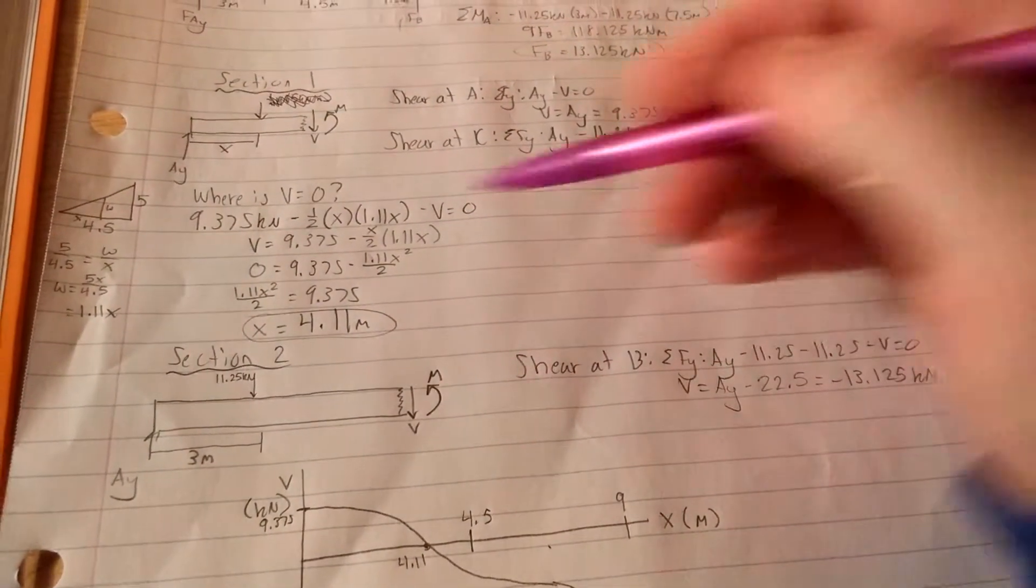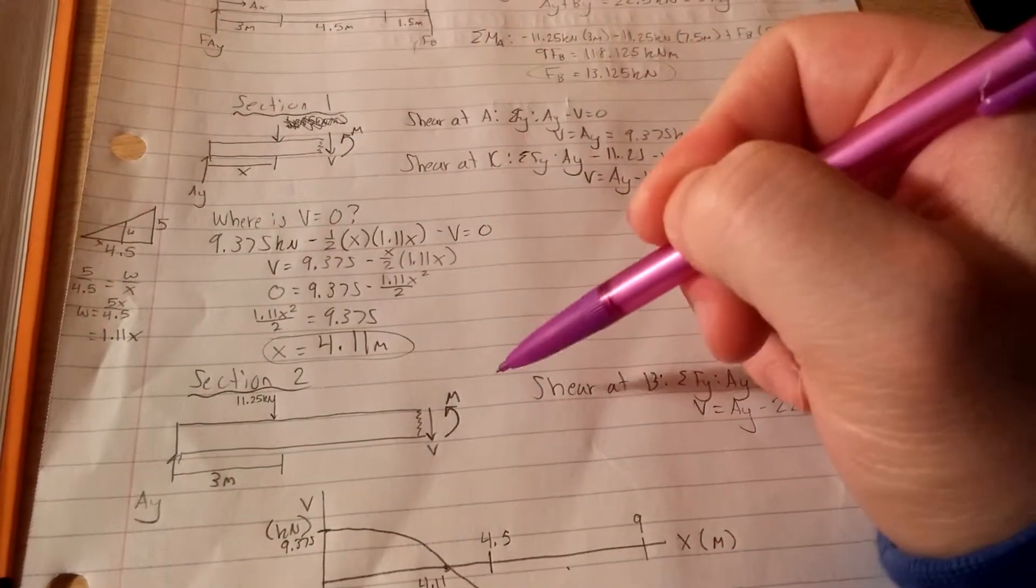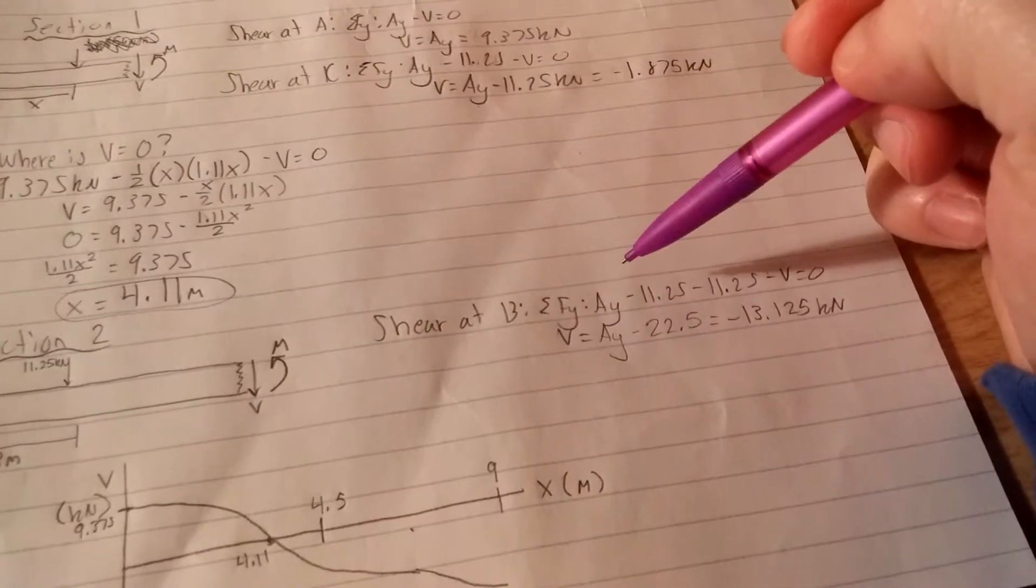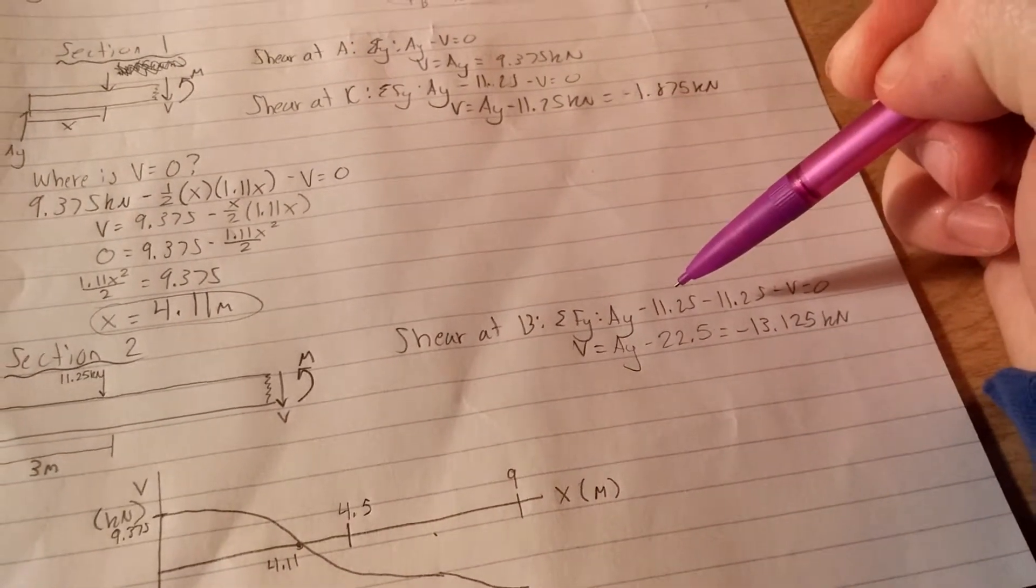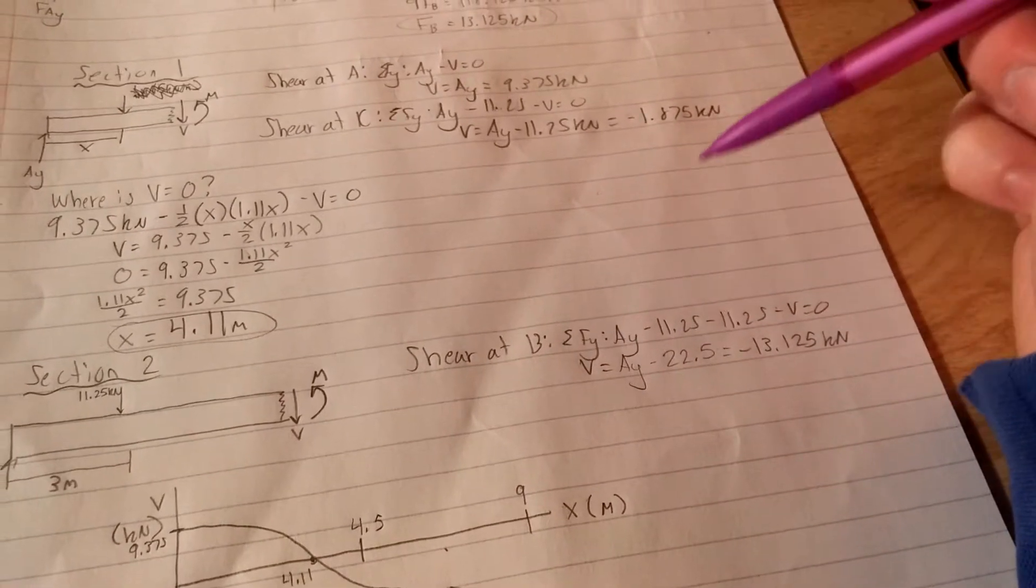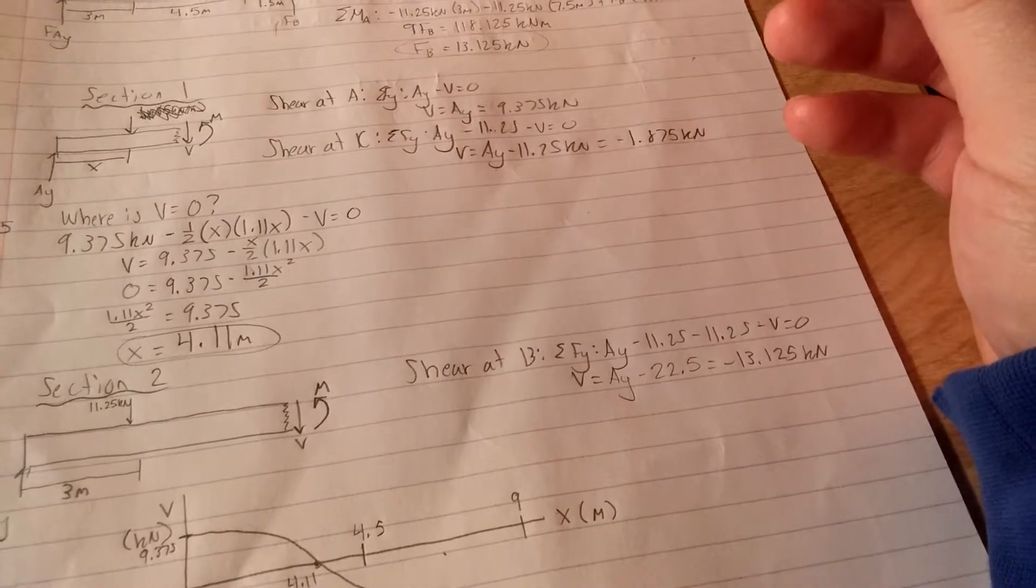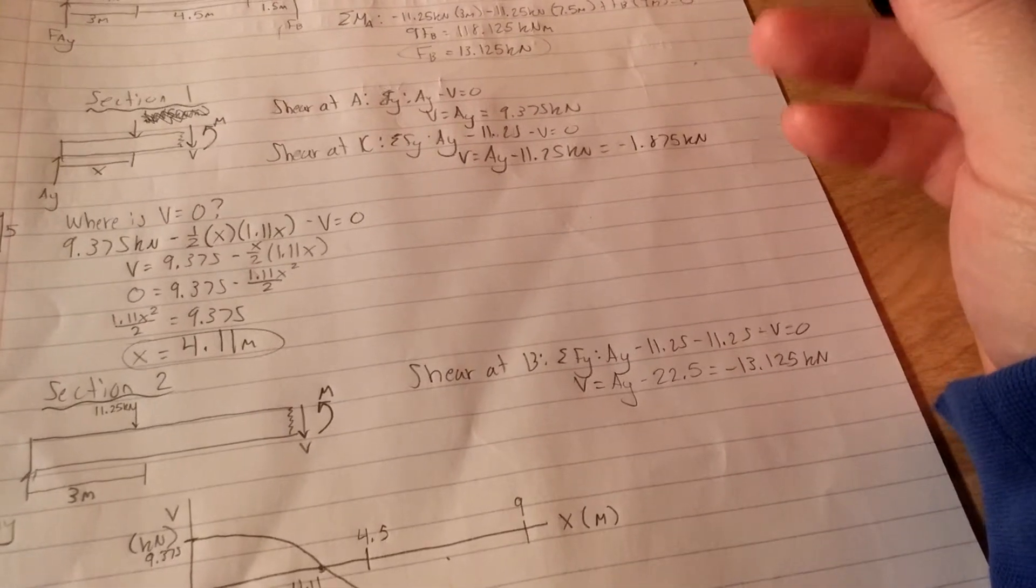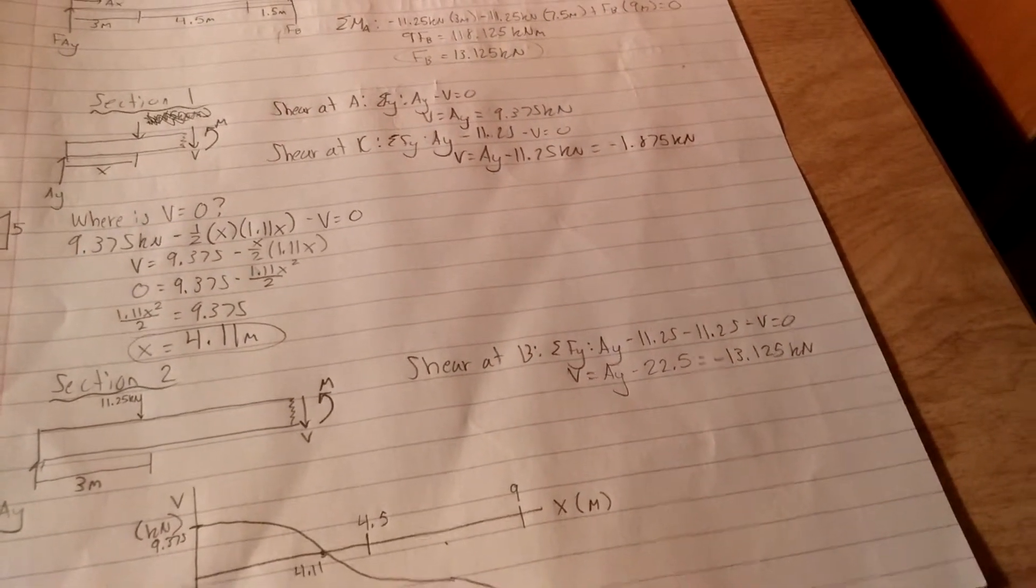We're going to have AY pointing up, this intensity pointing down, and all the way at B we're going to have the other intensity pointing down as well as the shear. So AY minus 2 times 11.25 minus V equals zero. So V equals AY minus 22.5. You end up getting that V, the shear, is equal to negative 13.125 kilonewtons.